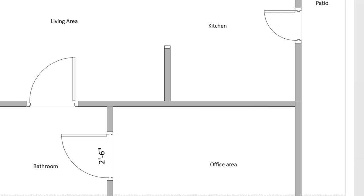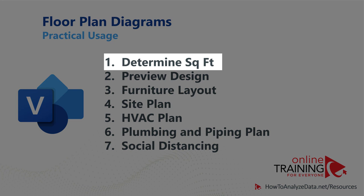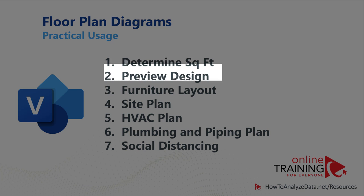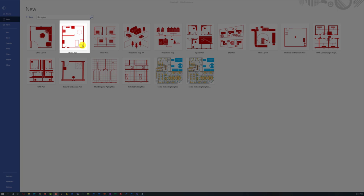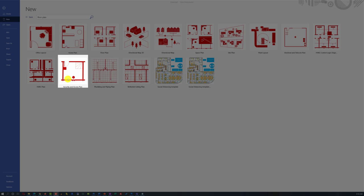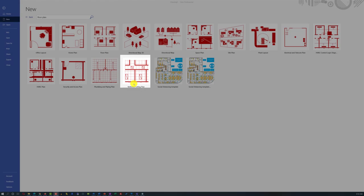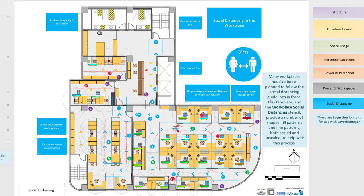The most practical uses of floor plan diagrams include helping you determine square footage and preview the design. You can also create a furniture layout for the office or home, create a site plan, document how HVAC controls are going to work by building an HVAC plan, create a security and access plan, create a plumbing and piping plan, electrical plans, and even help people understand how social distancing is going to work in the living or office space.